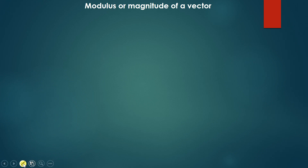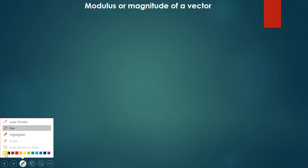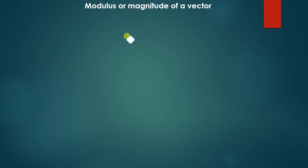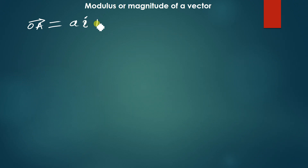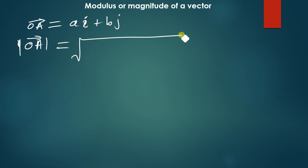So let's begin to learn how to calculate the magnitude or the modulus of a vector. The modulus of a vector is simply just its size. So if you have been given the vector OA, and the vector OA is equal to Ai plus Bj, and you've been asked to find the magnitude of OA, then the magnitude of vector OA is simply given by the square root of A squared plus B squared.